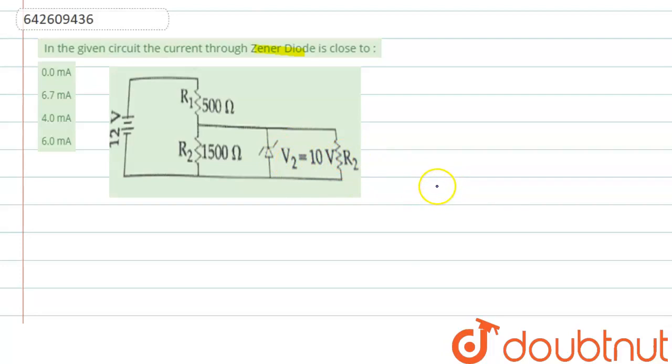So if the Zener diode will be off, then the voltage across R2 will be less than the voltage across Zener diode. If the voltage across R2 is greater than Vz, that means the Zener diode is on, and in this it is off.